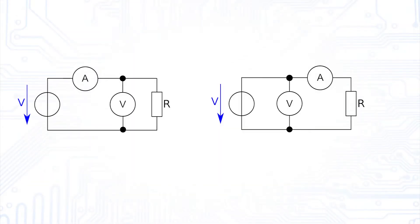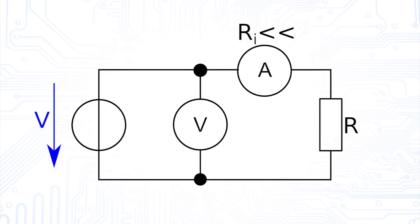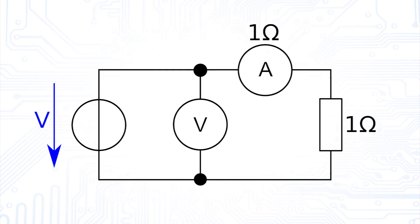You can see the two possible measurement circuits here. Which one we should choose depends on the size of the resistor we want to measure. The inner resistance of an ammeter is rather small, while for the voltmeter it is very large. In the first case, you see the ammeter close to the resistor. Since the real ammeter has a small resistance itself, the voltmeter will show a big error when measuring a small resistance. For example, if the inner resistance of the ammeter and the resistance you want to measure are both 1 Ohm, you would measure twice the voltage that actually drops at the resistor. As a result, we calculate a value of 2 Ohms instead of 1 for our resistor due to the insertion error of the ammeter.